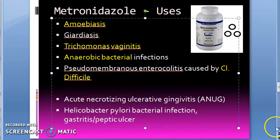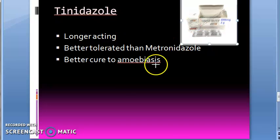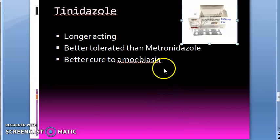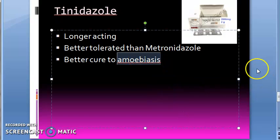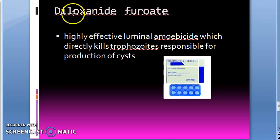Tinidazole is longer acting than metronidazole and is better tolerated, hence it is preferred over metronidazole. It is given as two grams per day — two thousand mg per day. It provides a better cure for amoebiasis. We will see the treatment regimen involving metronidazole, tinidazole, and diloxanide furoate together.